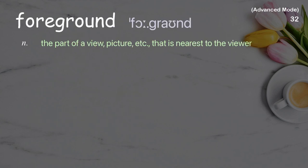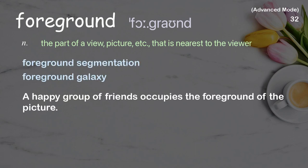Foreground: the part of a view, picture, etc. that is nearest to the viewer. Examples: foreground segmentation, foreground galaxy. A happy group of friends occupies the foreground of the picture.